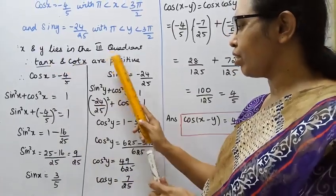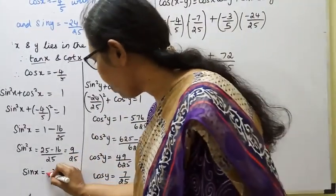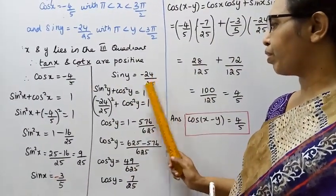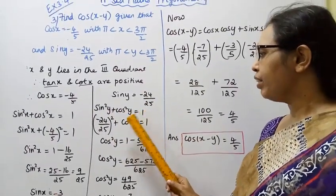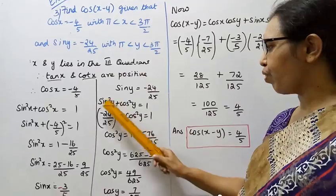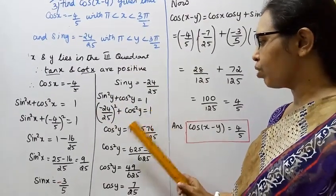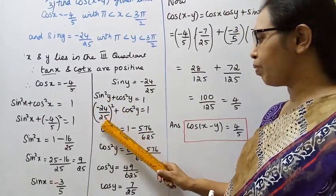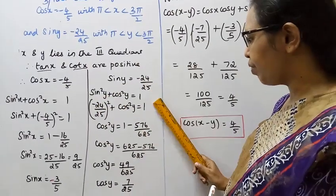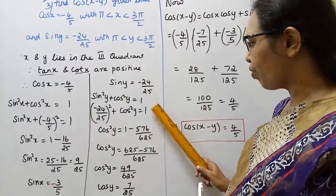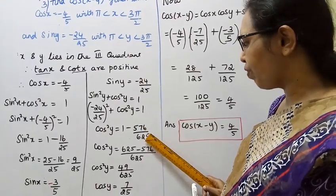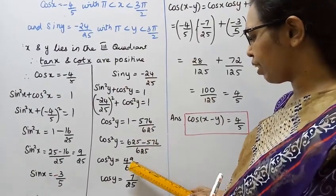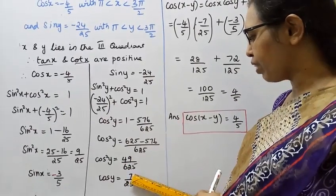But in the third quadrant, tan x and cot x are positive while sin x is negative. So sin x equals minus 3 by 5. Now for sin y equals minus 24 by 25, using sin squared y plus cos squared y equals 1, we get cos squared y equals 1 minus 576 by 625, which equals 625 minus 576 by 625, that is 49 by 625.